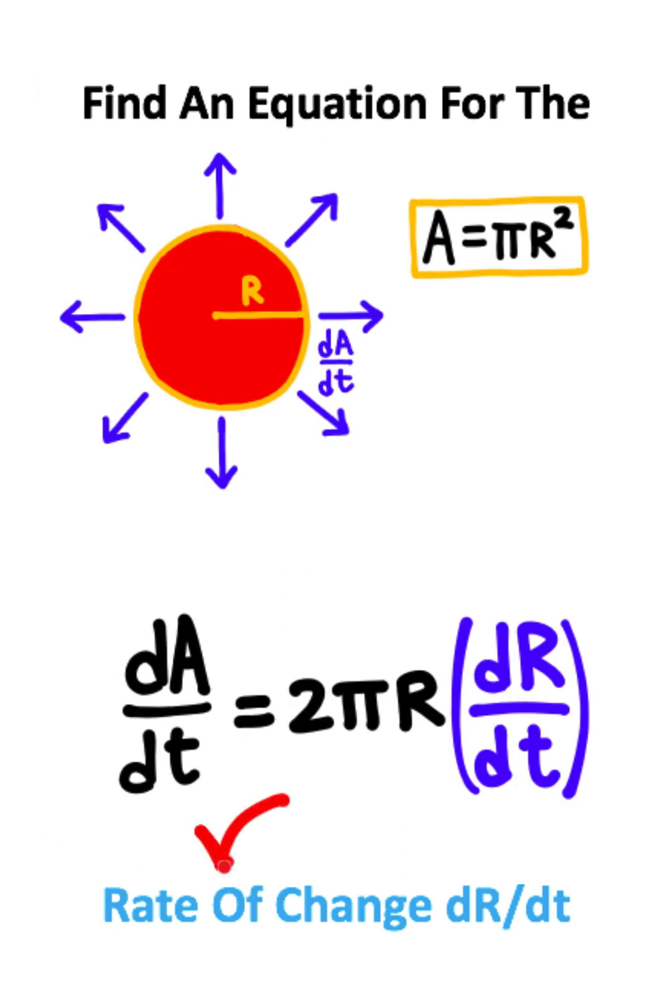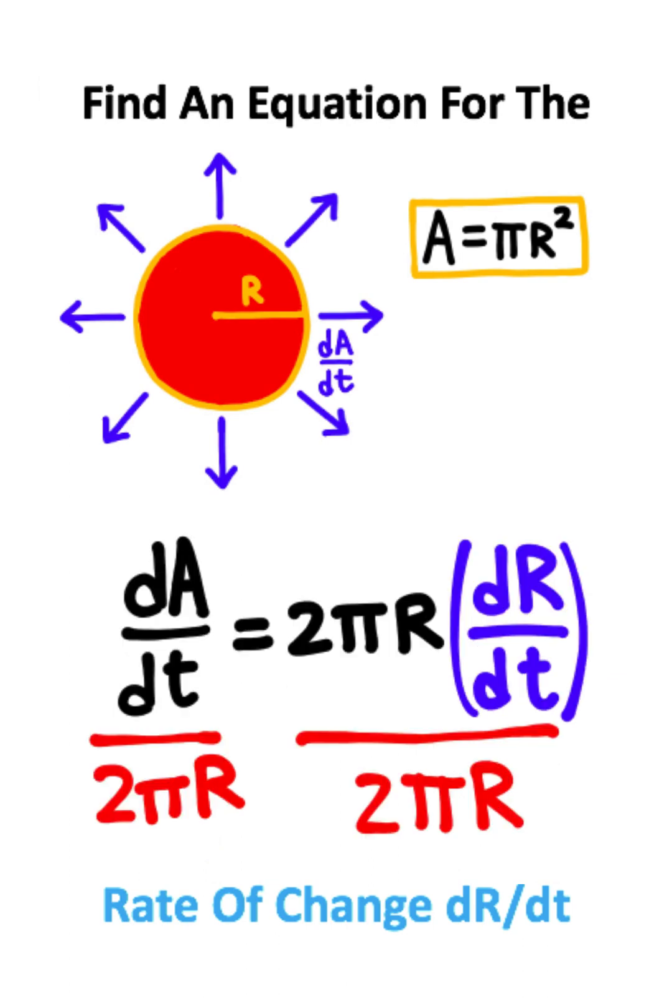Now since I'm trying to solve for the rate of change for the radius, what I can do is divide both sides by 2 pi r. That'll get the 2 pi r's to cancel on the right, giving me an equation which looks like this.